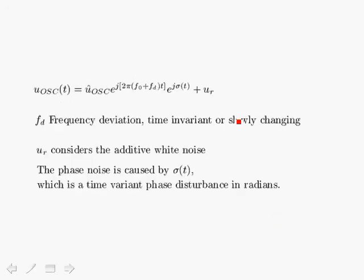Let's take a look at the effect of phase noise in the direct conversion receiver. Here we're showing the model of the phase noise in the oscillator itself. The oscillator has an amplitude U-oscillator. It has the frequency of interest, F0, which is the center frequency of the oscillator.